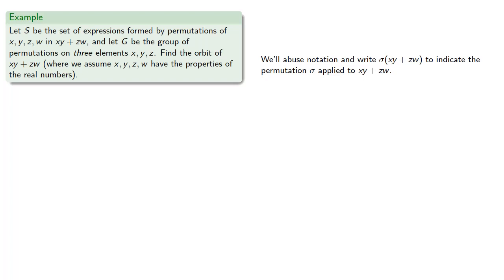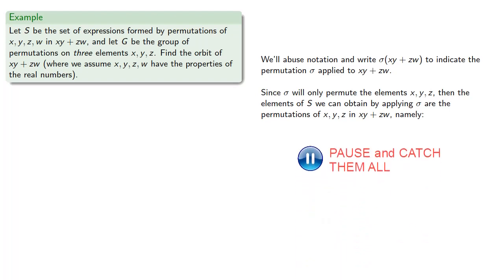Now, since we're dealing with sigma from the group of permutations on three elements, then sigma will only permute the elements X, Y, and Z. And then the elements of S we can obtain by applying sigma are the permutations of X, Y, and Z in X, Y plus Z, W.